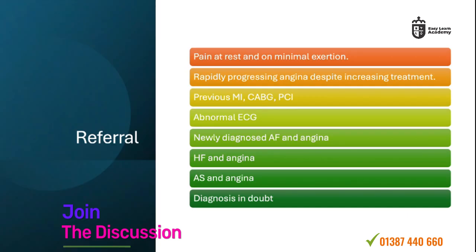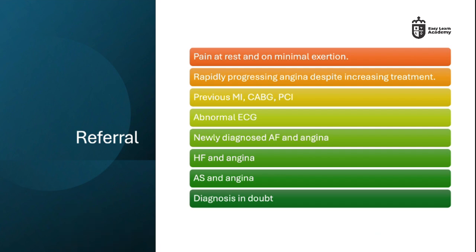Key criteria for referring patients with angina: pain at rest or with minimal exertion — refer to cardiology. Rapidly progressive angina despite increasing treatment — refer. Previous MI, CABG, or PCI — refer. Abnormal ECG findings on first presentation — refer. Newly diagnosed angina with AF — refer. Signs of heart failure with angina symptoms — refer. Aortic stenosis with angina — refer. And if you have any doubts about the diagnosis — refer to secondary care.